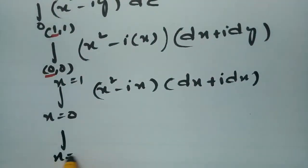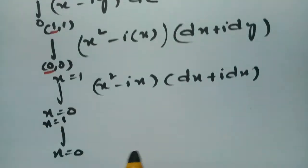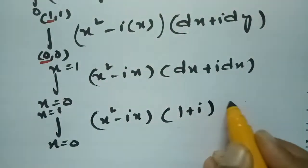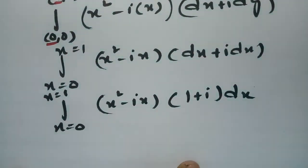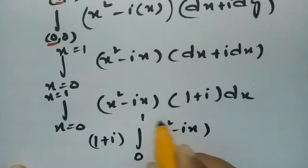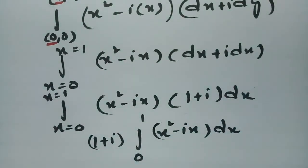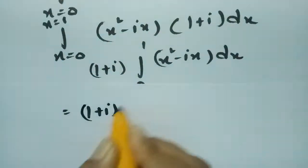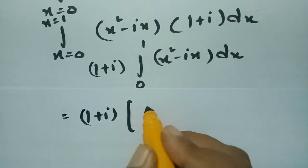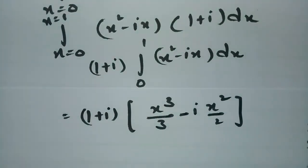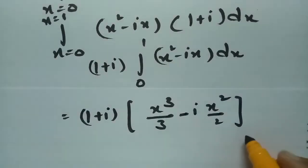Transforming everything in terms of x, with x going from 0 to 1, this becomes the integral from 0 to 1 of (x² - ix)(dx + i·dx). Taking dx common gives (x² - ix)(1 + i) dx. Since (1 + i) is a constant, integrating with respect to x gives: x³/3 - i·x²/2, evaluated from x = 0 to x = 1.